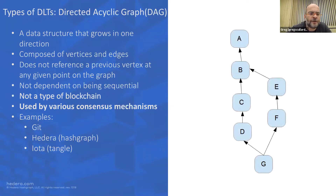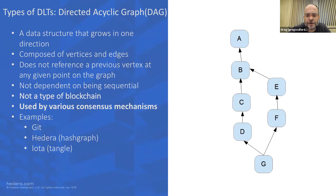A directed acyclic graph, on the other hand, is a data structure that grows only in one direction. It's composed of vertices and edges — boxes and arrows — and it's impossible for the graph to loop back on itself; that's the notion of directed acyclic. It's a different way of storing data with its own properties. Various implementations exist: Git uses a directed acyclic graph, though it's not a distributed ledger in this context. The hashgraph algorithm in Hedera uses a DAG, and so does IOTA with its tangle.